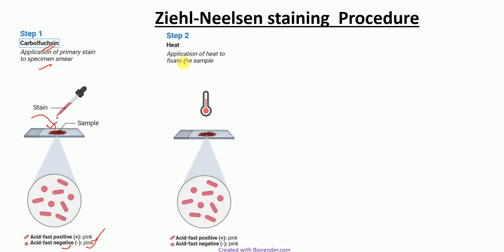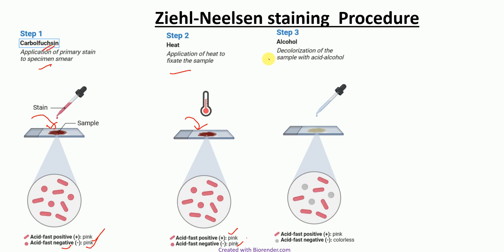In step two, heat is applied to fix the sample. Both acid-fast and non-acid-fast bacteria still appear pink at this stage. In step three, decolorization is done with acid alcohol. After decolorization, acid-fast bacteria retain the pink color, whereas non-acid-fast bacteria become colorless.